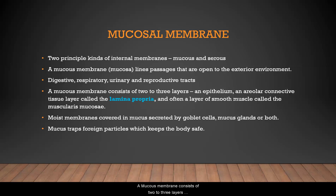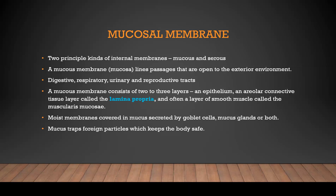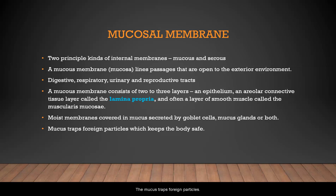A mucous membrane consists of two to three layers: an epithelium, an areolar connective tissue layer called the lamina propria, and often a third layer of smooth muscle called the muscularis mucosae. These are moist membranes covered in mucus secreted by goblet cells and mucus glands. The mucus traps foreign particles, bacteria, and viruses that are supposed to keep the body safe.